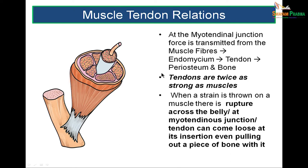What is the relationship between muscle and tendon? At the myotendinous junction, forces get transmitted from the muscle fiber through the endomysium to the tendon and then to the bone. Always remember: tendons are twice as strong as muscles. So when strain is thrown on a muscle, what will rupture is not the tendon but the belly, or the myotendinous junction could tear, or the tendon could pull out a piece of bone with it.